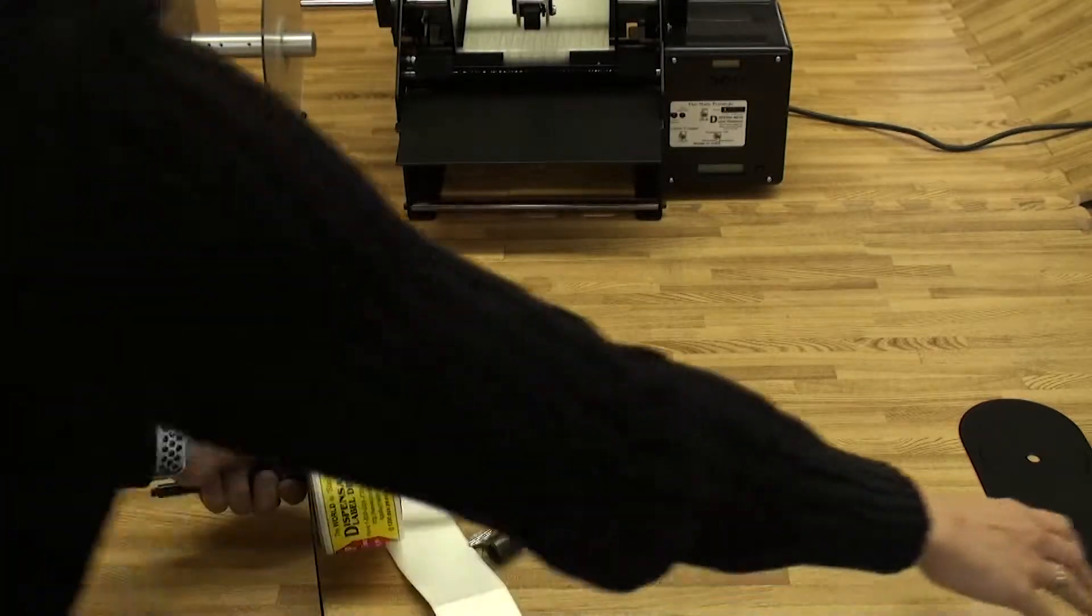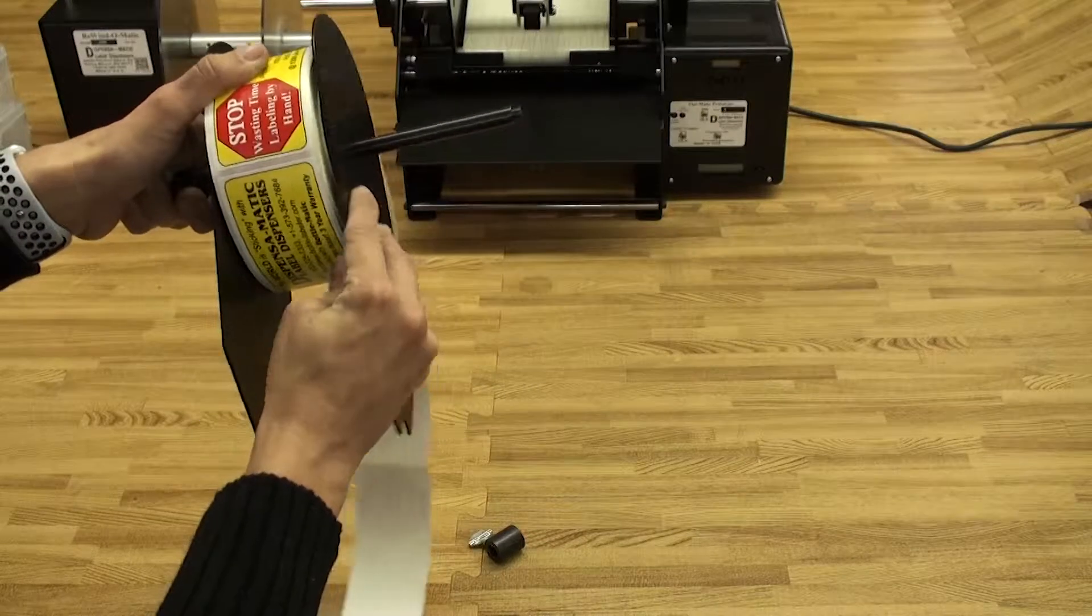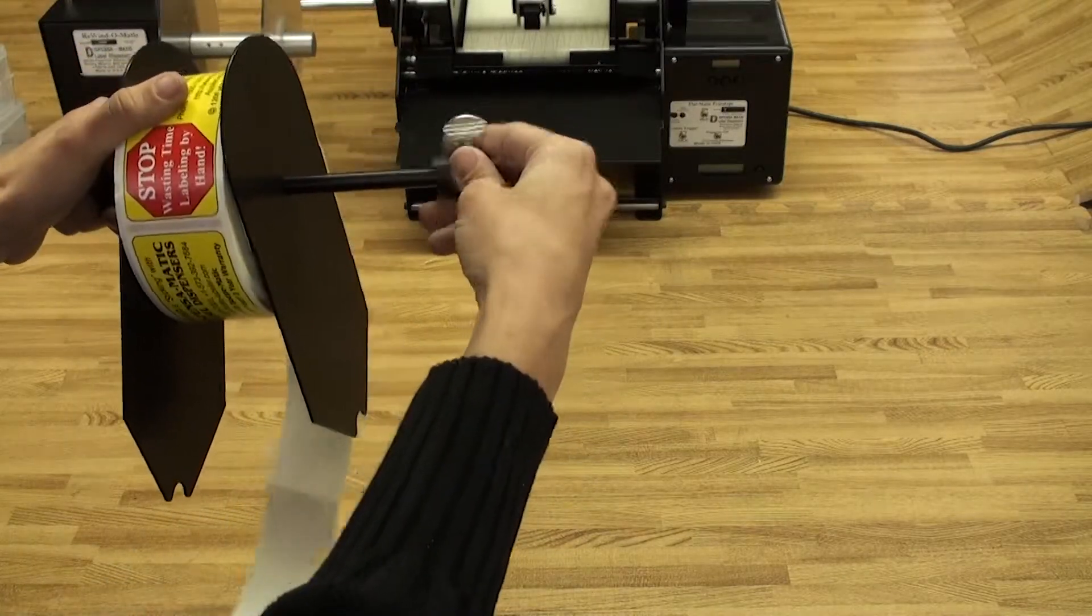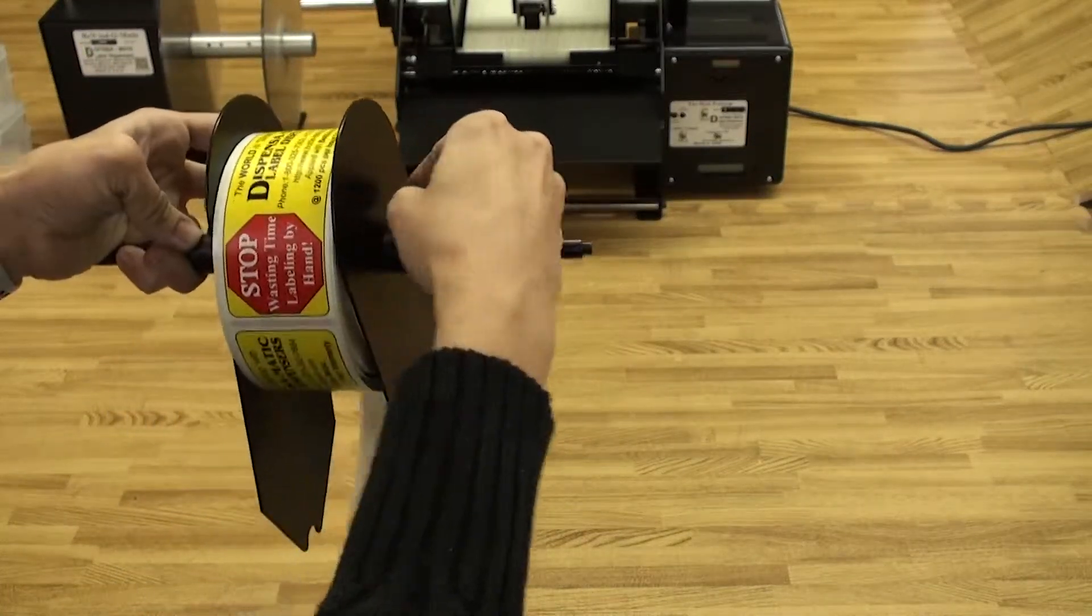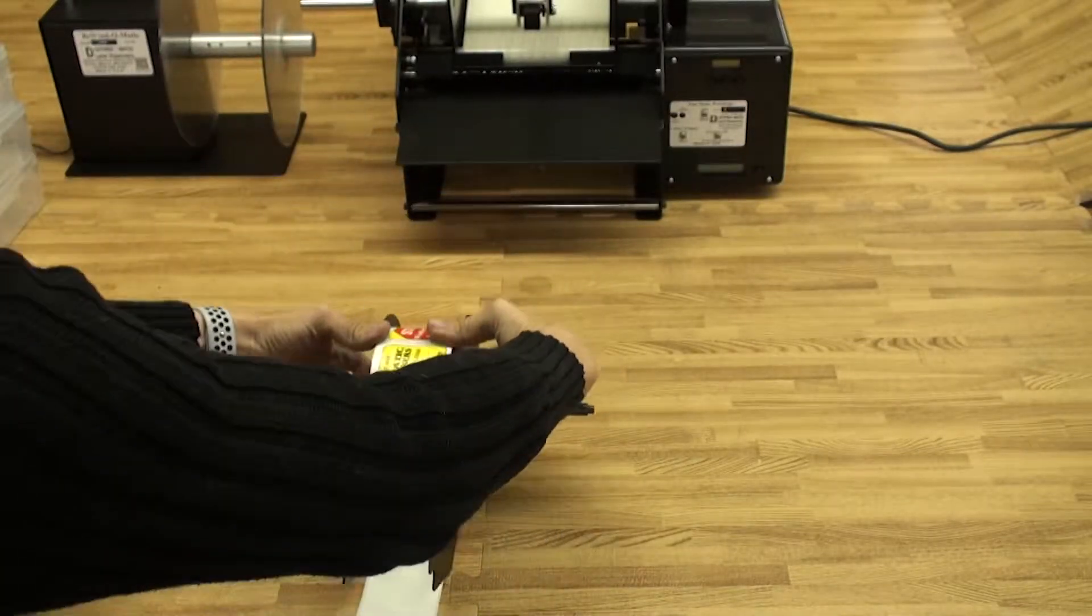Now we're going to put on the second roll guide and the last one inch collar with thumb screw. Tighten so that there's just a little bit of tension so that the roll of labels will not free spool.